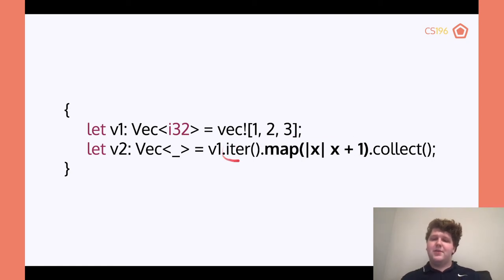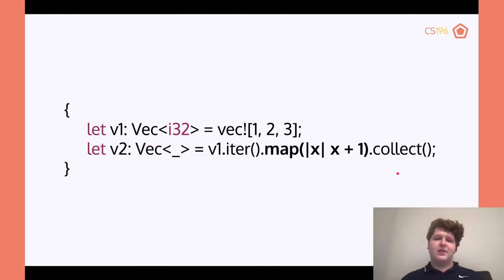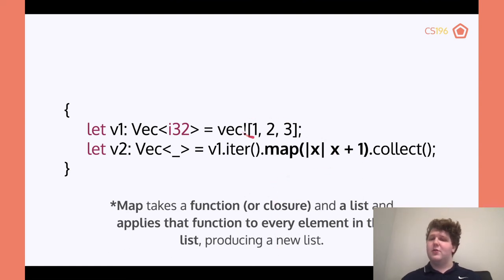The iterator will basically be a pointer — here's the first piece of data, when you're done let me know and we'll move on to the next. Rather than keeping that piece, we want to take all that data back and create it into a vector — that's why we have the collect function. Map will take a function or a closure and a list, then apply that function to every element, producing a new list. In this case it'll turn 1, 2, 3 into 2, 3, 4 because we're doing x plus 1.